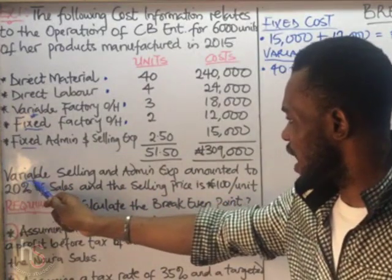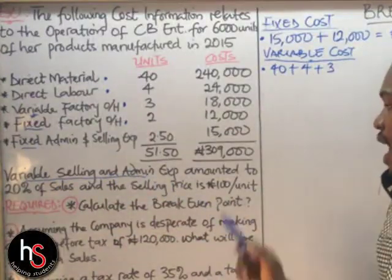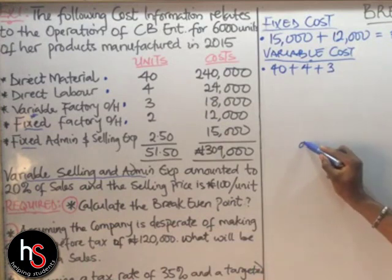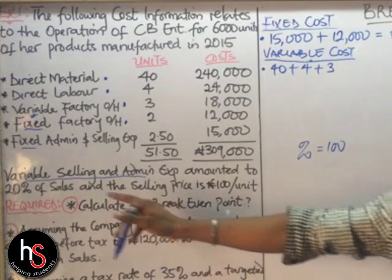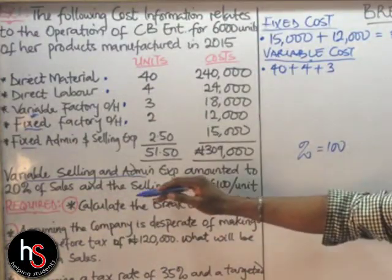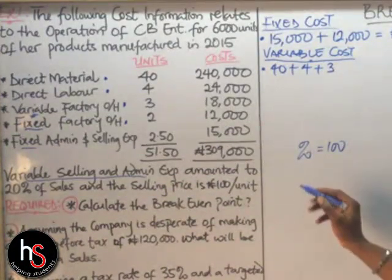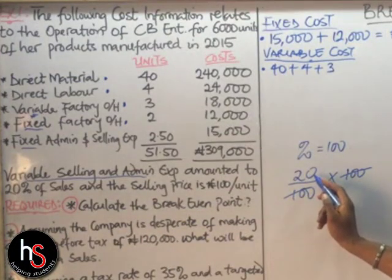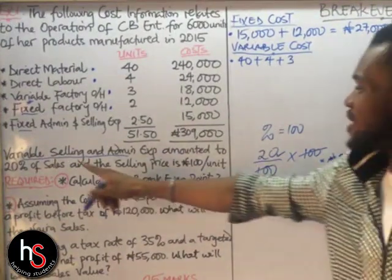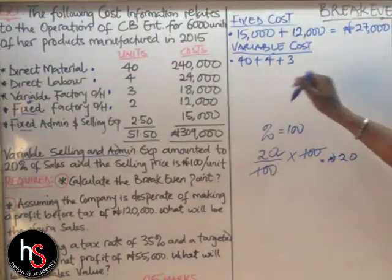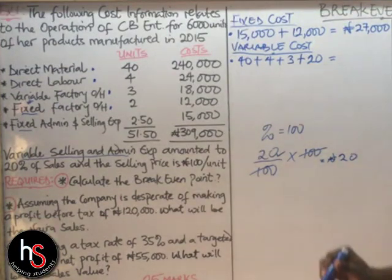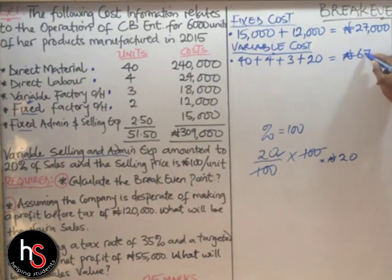This variable selling and admin expense is another variable cost. To find its value: 20% of sales = 20/100 × $100 = $20. So adding everything up: $40 + $4 + $3 + $20 = $67. Our total variable cost per unit is $67.